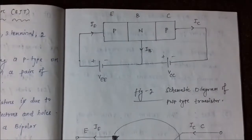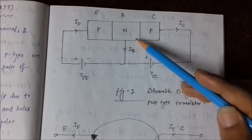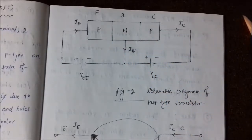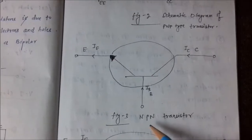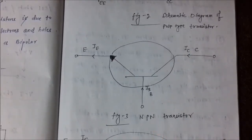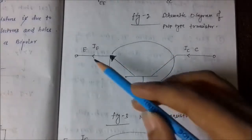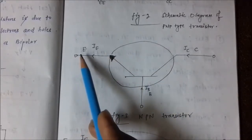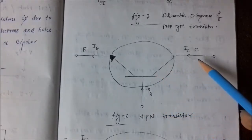Similarly, this is a PNP transistor where there is an n-type semiconductor which is sandwiched in between two p-type semiconductors. Now the symbols for the NPN and PNP transistors are as follows. This is the symbol for an NPN transistor. We will discuss about these terminals — this is the emitter terminal E, this is the base terminal B, and this is the collector terminal.